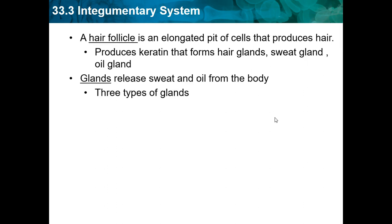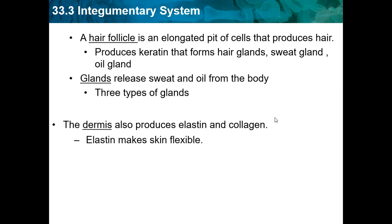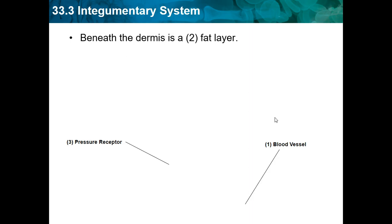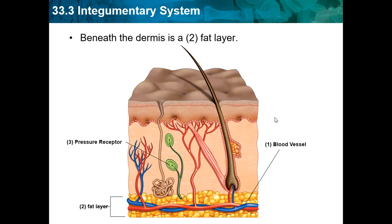Glands in the dermis release sweat and oil from the body. The dermis also produces elastin and collagen — elastin makes skin flexible and collagen gives skin its shape. Beneath the dermis is a fat layer, and underneath that we have veins and arteries. So the layers are: the epidermis, the dermis, and then a fat layer.